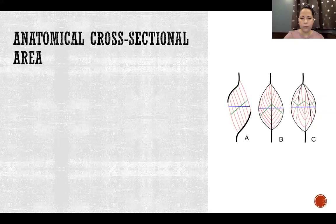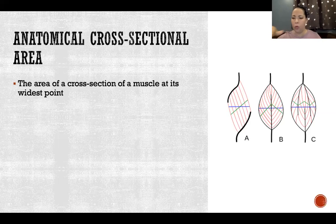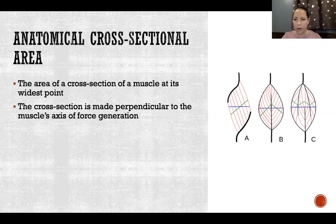Anatomical cross-sectional area is the area of a cross-section of a muscle at its widest point. In the picture, the anatomical cross-sectional area is shown by the blue line in each image. The red lines show the direction of the muscle fibers, and the blue line cuts across at the widest part — usually right in the center. That cross-section is made perpendicular to the muscle's axis of force generation.